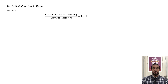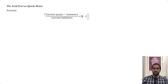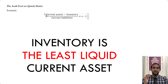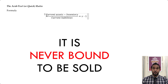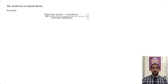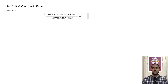Now let's look at the quick ratio, also called the acid test ratio. Its formula is current assets minus inventory, divided by current liabilities, giving an X to 1 ratio as the output. Why are we subtracting inventory? Inventory is the least liquid current asset — it is never guaranteed to be sold. You could be stuck with inventory and still have creditors to pay. For example, during COVID-19 lockdowns, businesses couldn't operate — stock sits in your store or warehouse but creditors still want their money.